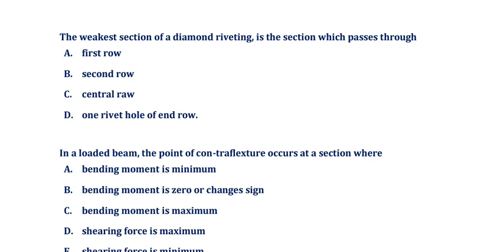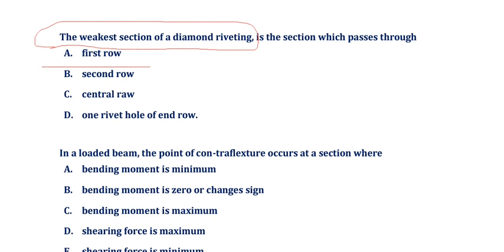The weakest section of a diamond riveting is the section which passes through the first row. In diamond riveting, the weakest section is the first row — option A is the correct answer. The rivet passes through the first section, which is the weakest section.